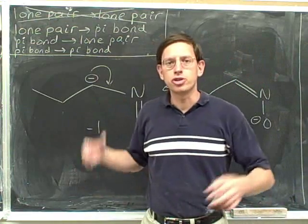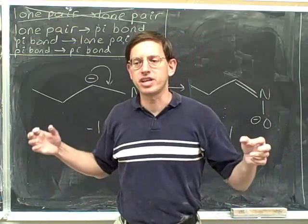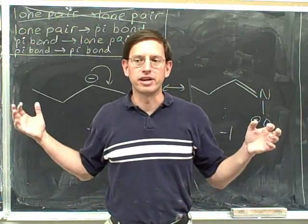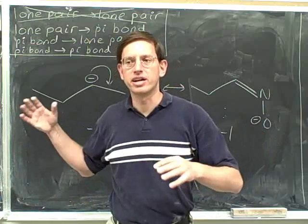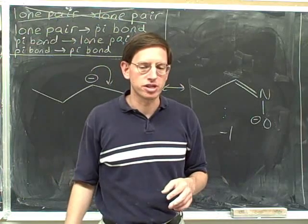Now in these examples I've been giving you two arrows at a time, so the next thing that we're going to do is I'm going to give you a few examples where there's more than two arrows. I'm still going to be giving you the arrows, but I'm going to give you more than two arrows at a time and ask you to draw the resonance structures.